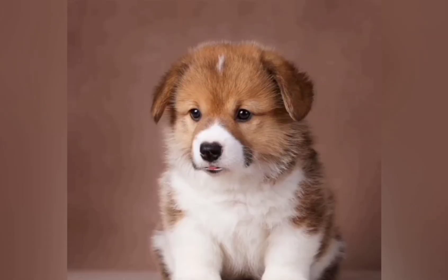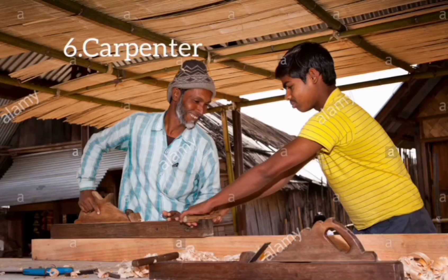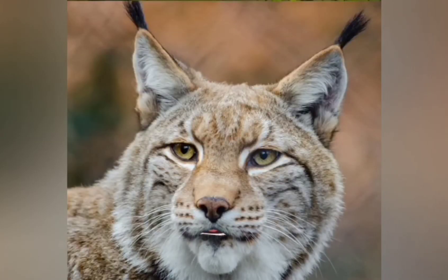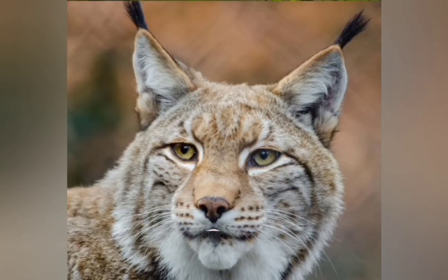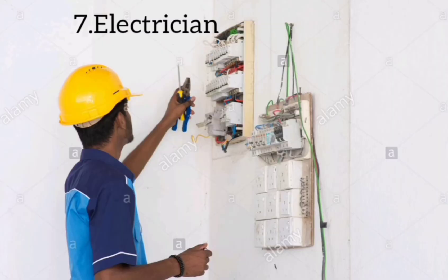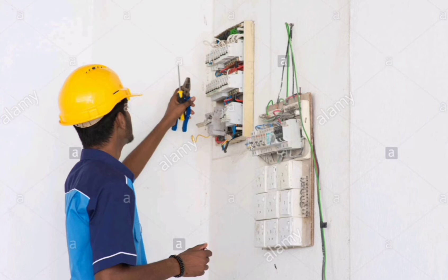Sixth one: Carpenter. A carpenter works with wood. He makes wooden doors and windows. Seventh one: Electrician. An electrician works with electrical fittings. He puts all the wires and plugs for electricity.